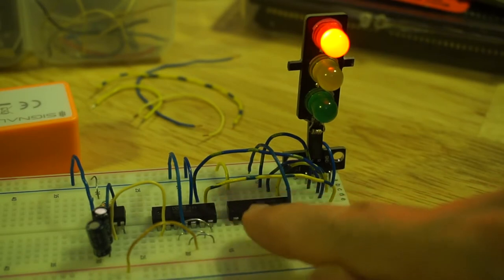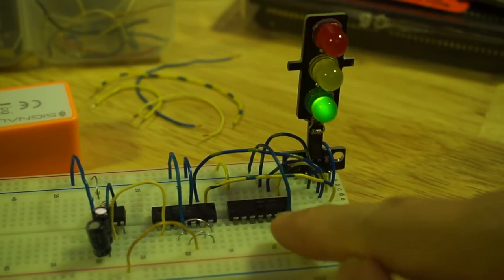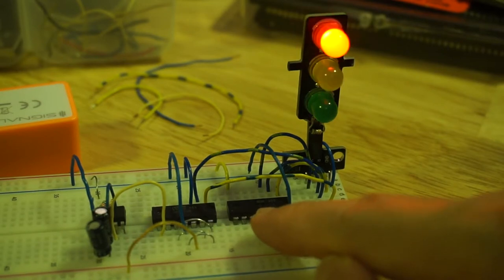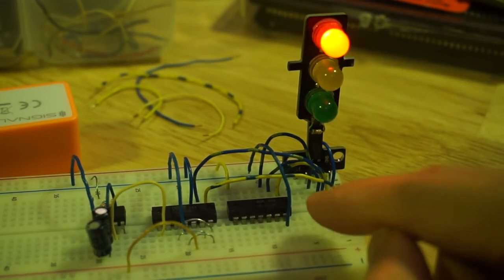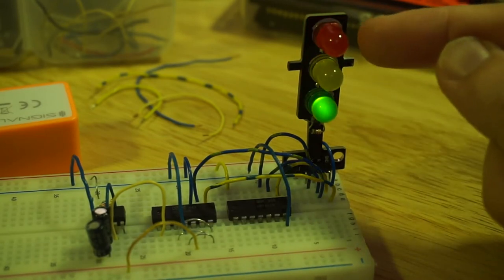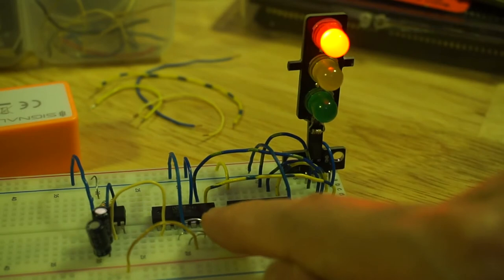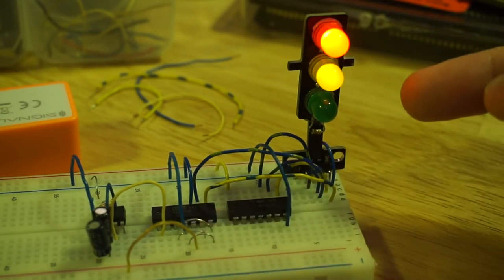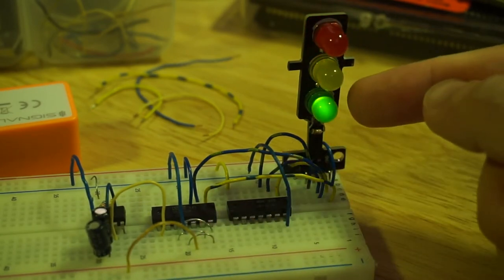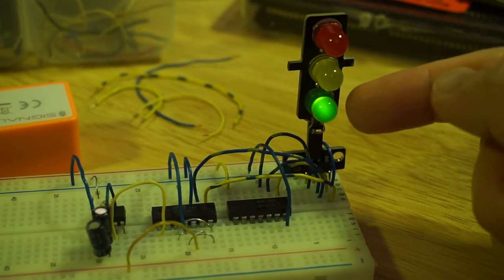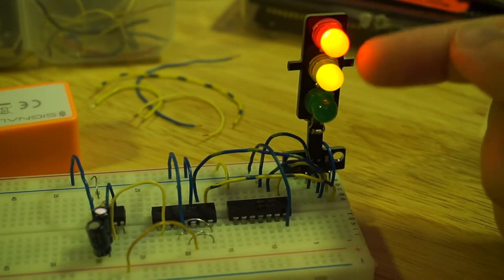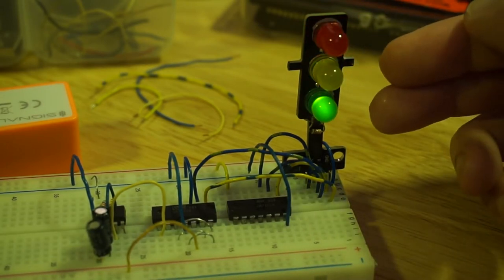And now I have the 7402 quad negated OR gate chip hooked up. So there are four NOR gates, and I'm only using one of them. The inputs of which are the red and yellow outputs from the decade counter. And the output of the NOR gate is driving the green LED. So whenever the red and the yellow are off, the green is on. But the green is off when either of these two are on. And that completes the traffic light sequence.